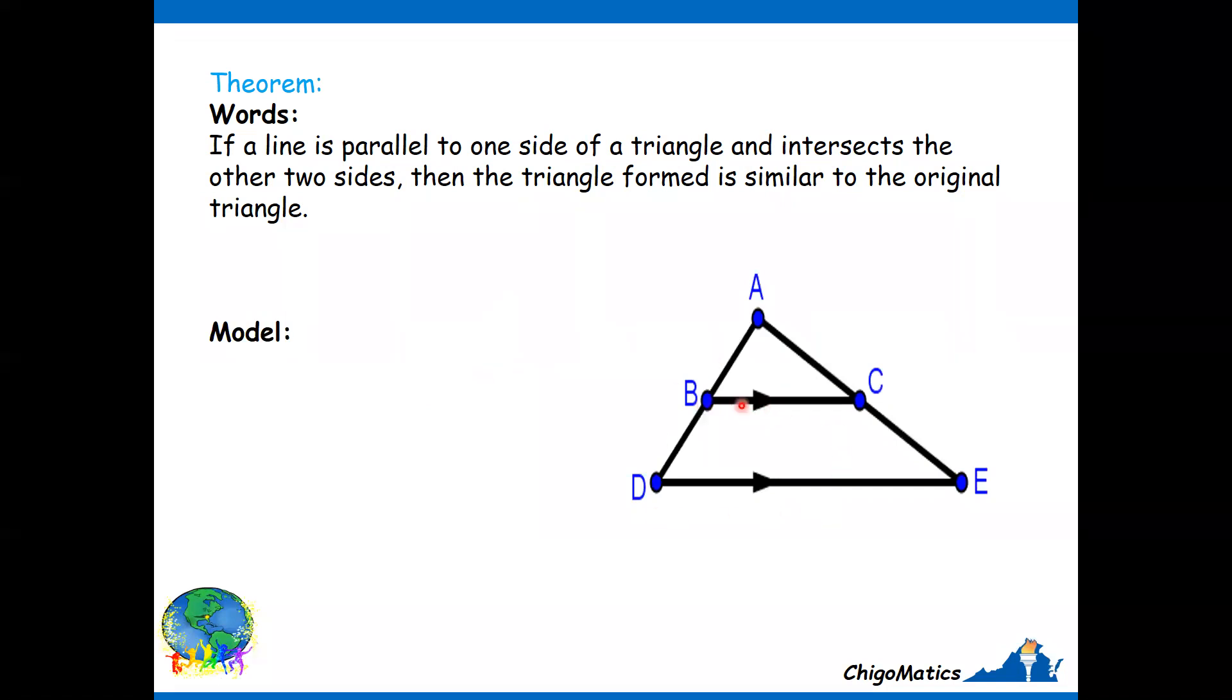We are simply saying this line is parallel to that—BC parallel to DE. Triangle ABC is formed and the conclusion is triangle ABC is similar to triangle ADE.